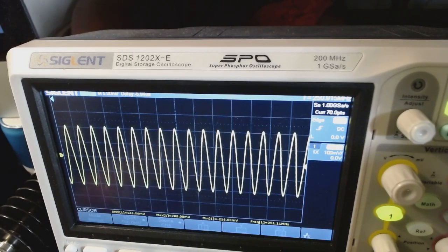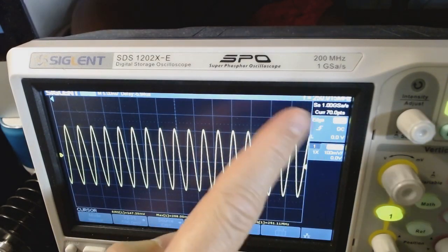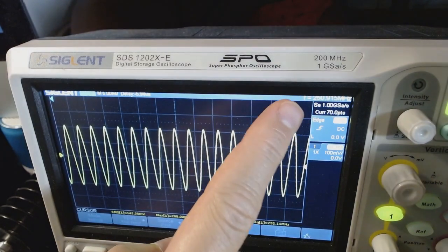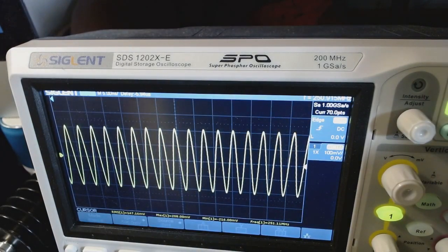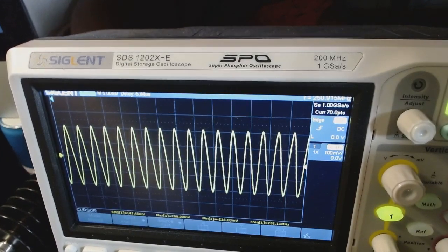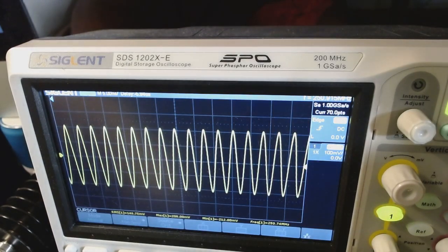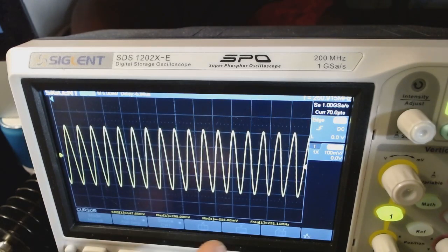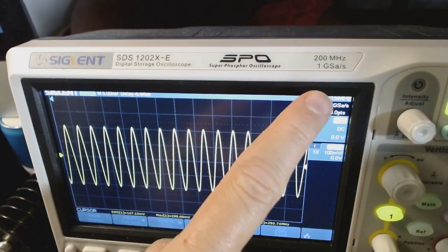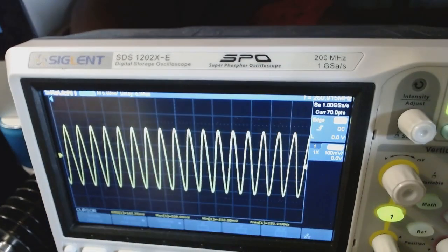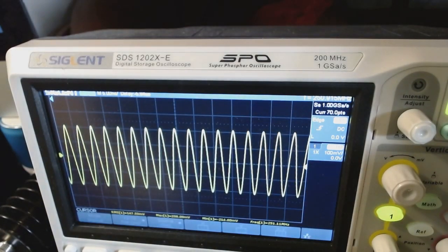And this actually makes some sense because, I mean, with one gigasample, theoretically speaking, in a purely mathematical world, we could get basically signals up to 500 megahertz. But in this case, 250 and it looks like it's what we have here. So I'm very happy with that.